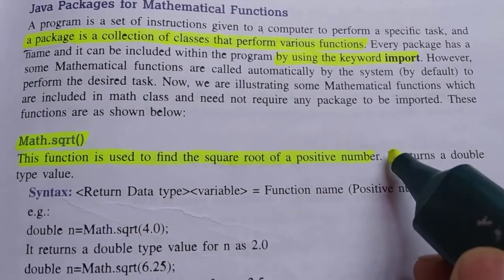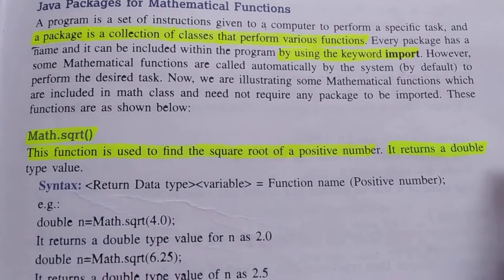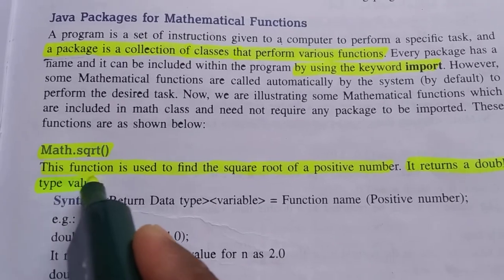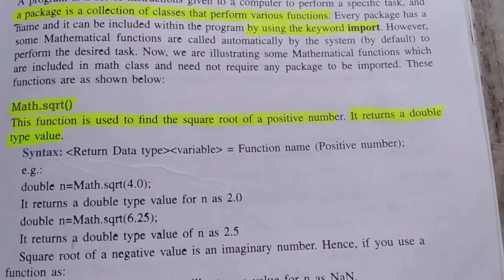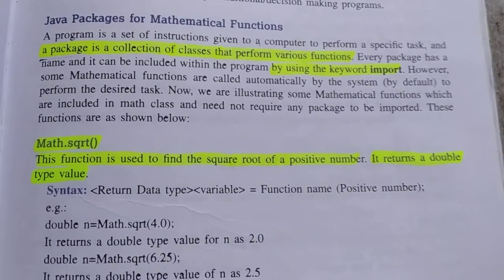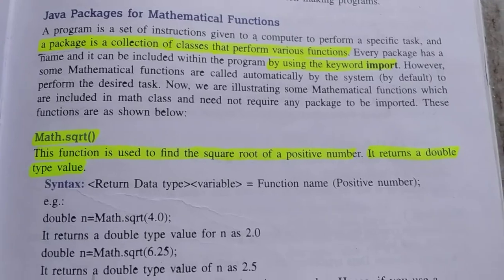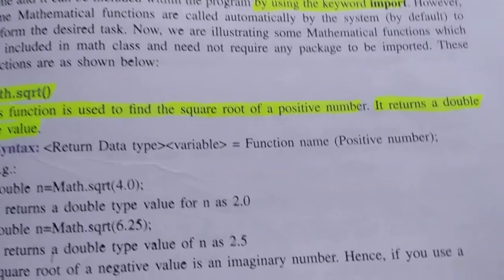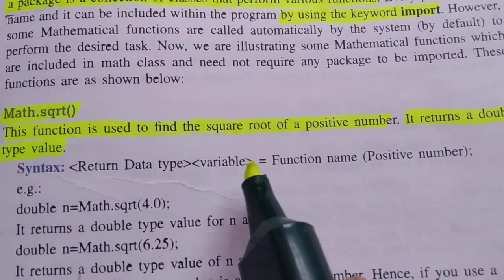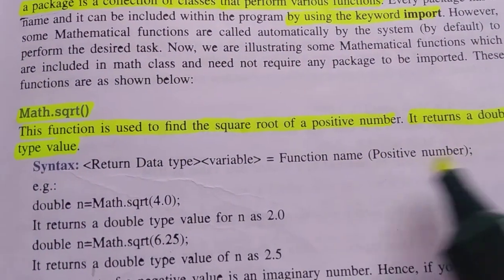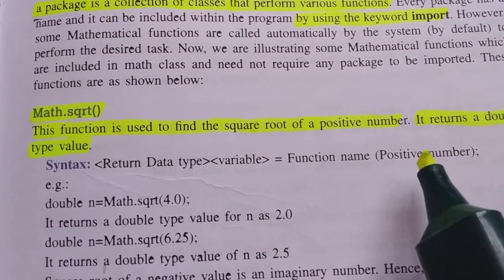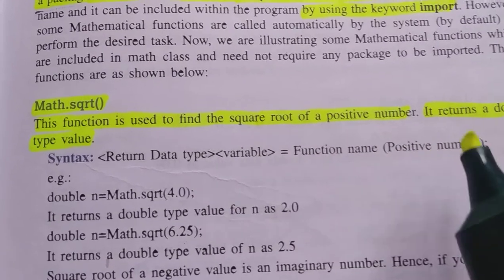After finding the square root, the function will return a value. What type of value will it return? It will return a double type value — this is very important. The question may come: if you are using Math.sqrt(), what data type will it return? See its syntax: return data type, variable name, and then the function name. Within the bracket, we pass the value for which we want to find the square root.